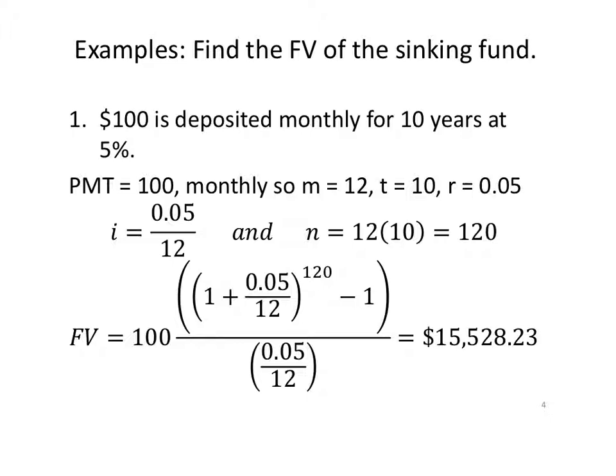Let's find the future value of the sinking fund. $100 is deposited monthly for 10 years at 5% interest. PMT is 100. Monthly happens 12 times a year, so m equals 12. t equals 10 years. 5% interest rate in decimal form is 0.05. We'll use r and m to make our i value. My n value monthly for 10 years gives me 120 total payments.